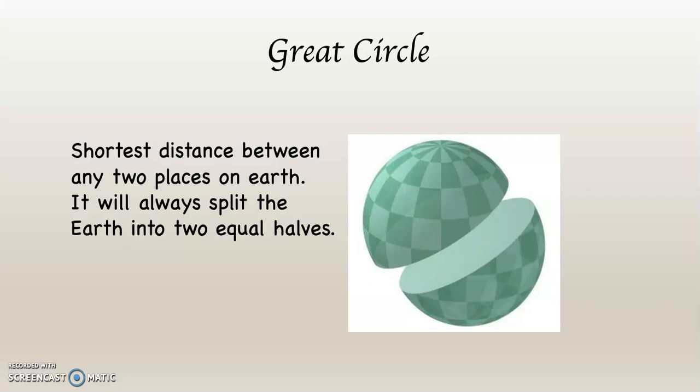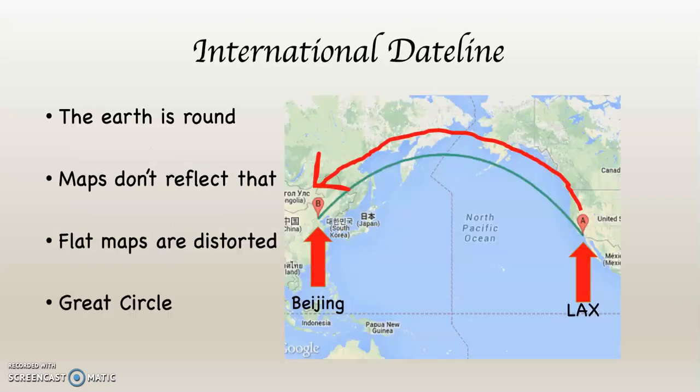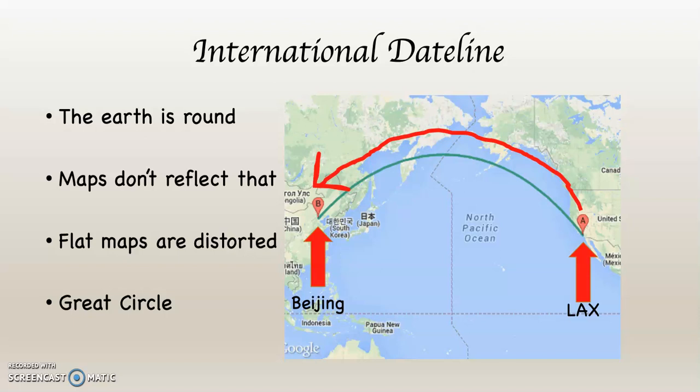The equator itself operates as a great circle. If you had a magic plane and took off from Los Angeles and flew all the way around the planet on the shortest route, when you landed back at L.A. you would have split the Earth exactly in half. That's what the arcing route between Los Angeles and Beijing represents — a great circle route.